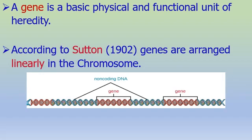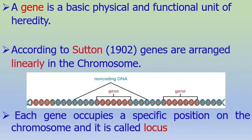Let's look at this picture. The red color regions represent genes. In between the genes is non-coding DNA. Each gene occupies a specific position on the chromosome, which is called a locus.